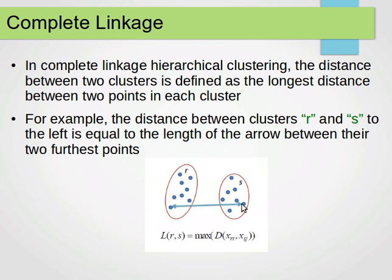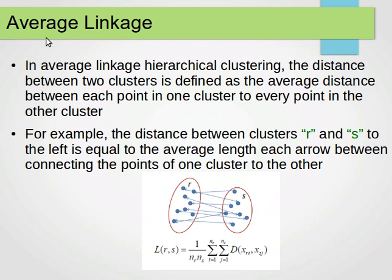Complete linkage is the opposite of single linkage — we find the distance between the two furthest points. In complete linkage hierarchical clustering, the distance between two clusters is defined as the longest distance between two points in each cluster. For example, the distance between clusters r and s is equal to the length of the arrow between their two furthest points.